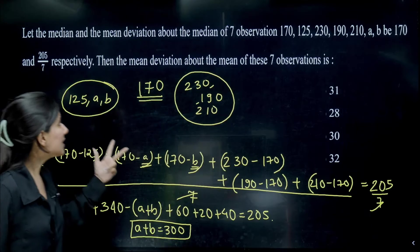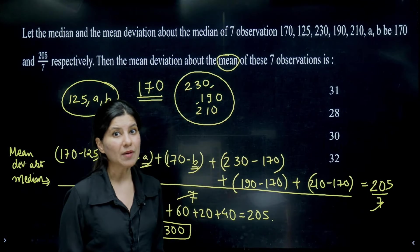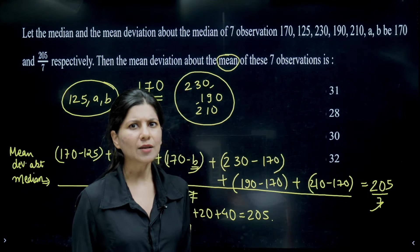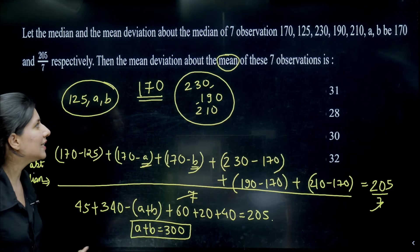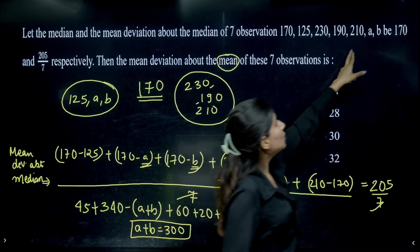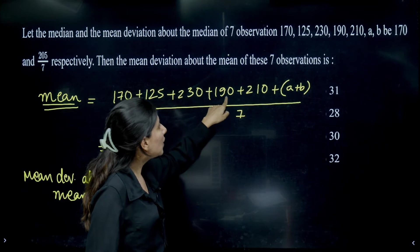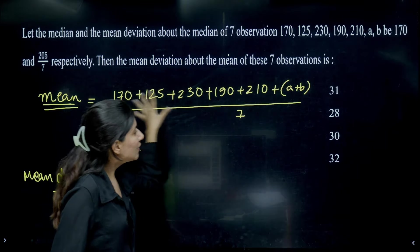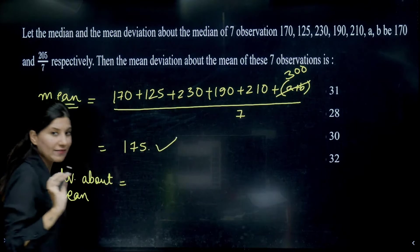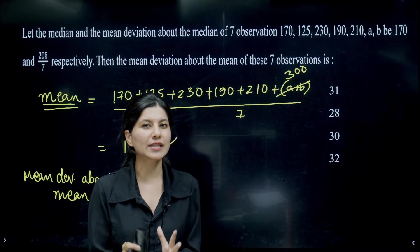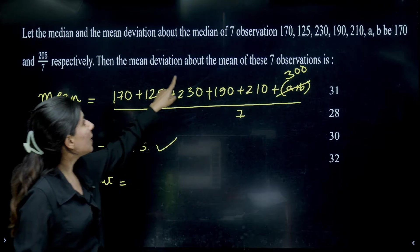Now we need the mean deviation about the mean, so we must first calculate the mean. Adding all observations: 170 + 125 + 230 + 190 + 210 + (A+B) = 170 + 125 + 230 + 190 + 210 + 300. Dividing by 7 gives the mean as 175. In this video, we are focusing on the algorithm rather than the calculation.